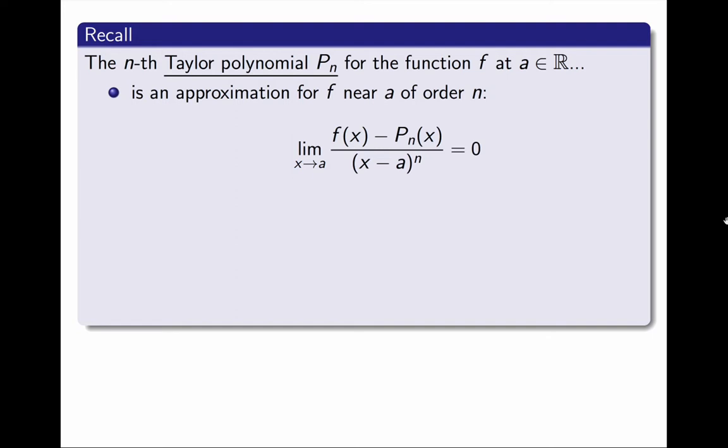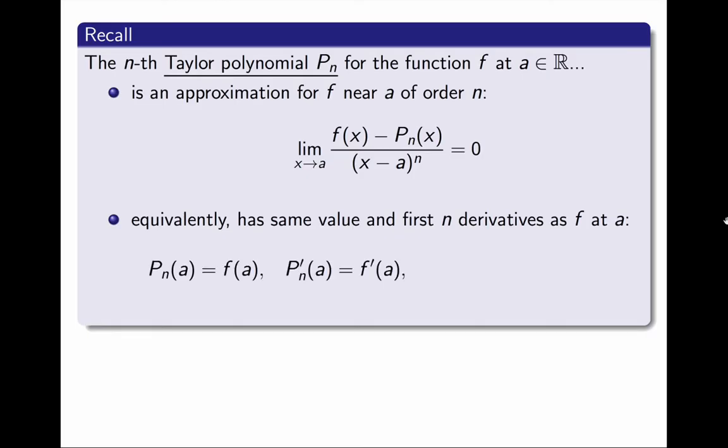In a previous video, I explained why this limit being 0 means that the polynomial is a good approximation for f. Or equivalently, f and the polynomial have the same value at a, the same first derivative at a, the same second derivative at a, etc., all the way to the same nth derivative at a.